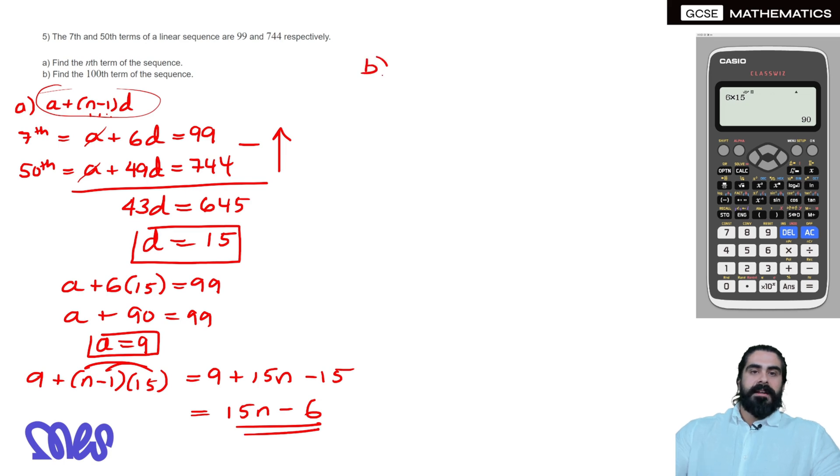Then part B is saying what's the 100th term, well the 100th term is when N equals 100. So we sub that in, 15 times 100 minus 6, that would be 1500 minus 6. So you subtract them, you get 1494 to be your solution.